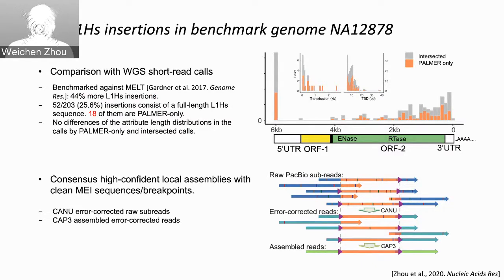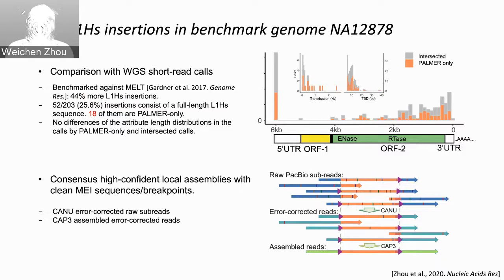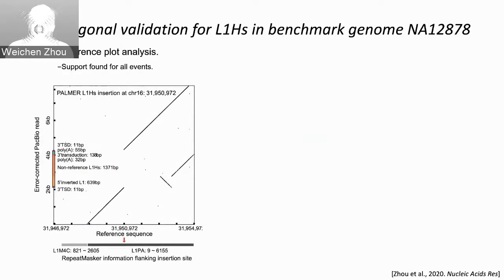We further wanted to validate our calls. Before validation, we wanted lower-error sequencing reads, so we performed a consensus assembly method. We also tried to use PCR to validate our calls, but it is hard because some insertions are sited in reference repetitive regions and it is so hard to design PCR primers. Therefore, we used several orthogonal validation approaches to validate our results.